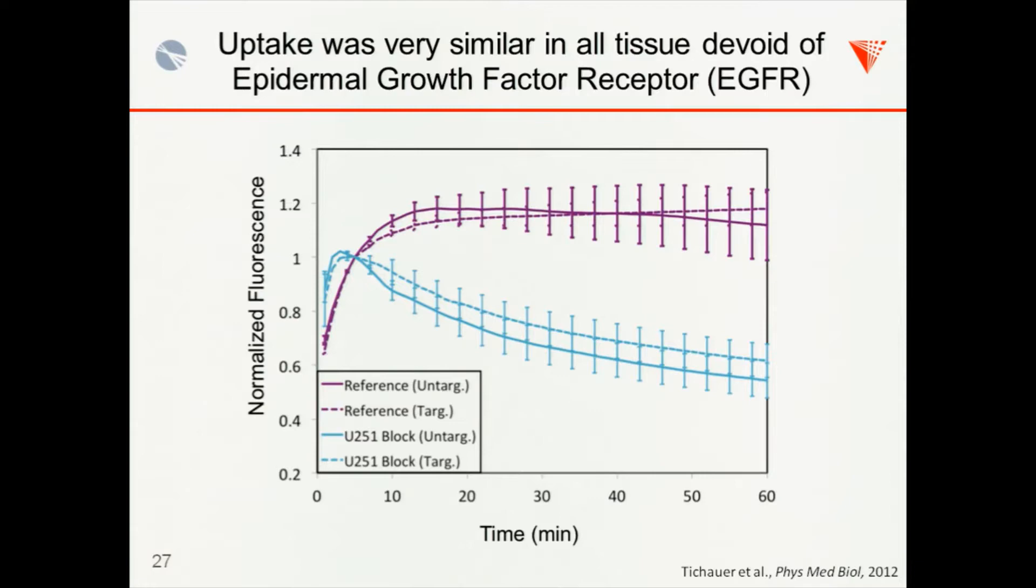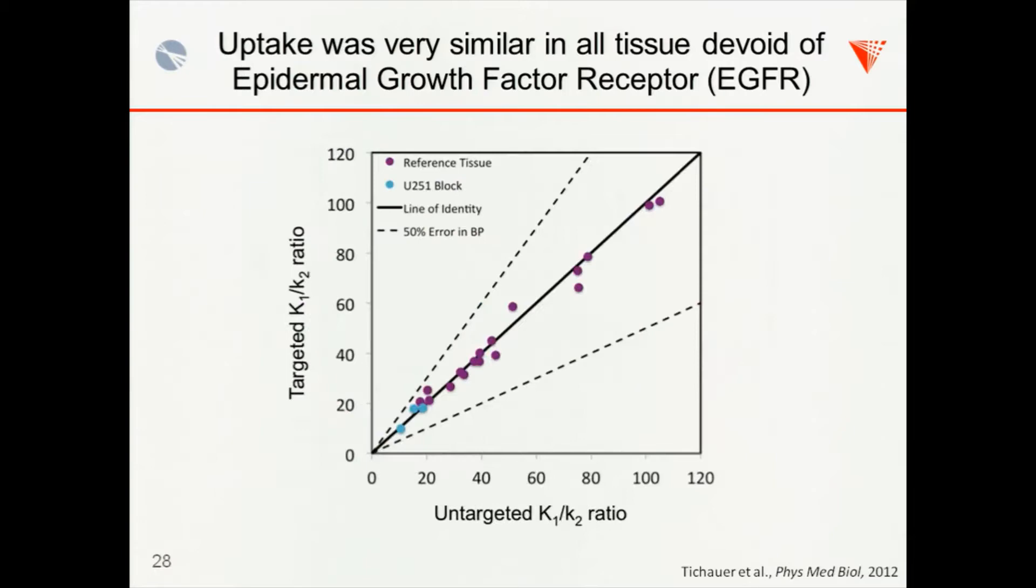And then we also, in one of the tumor lines that we studied, we blocked all the epidermal growth factor receptor in the tumor, blocked it before doing the imaging study. So hopefully there's no specific binding. And again, we found that the uptakes on average over six mice, or maybe it's a little less than that, are very similar between the untargeted and then targeted. That's the light blue, dashed and solid data, respectively.